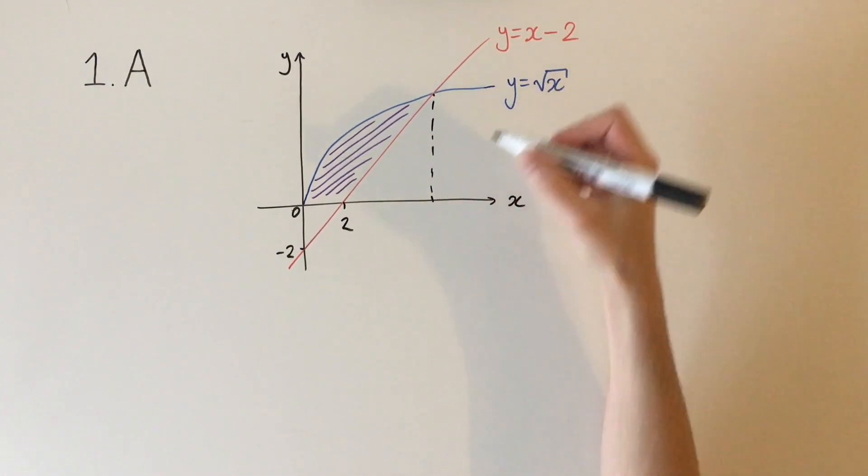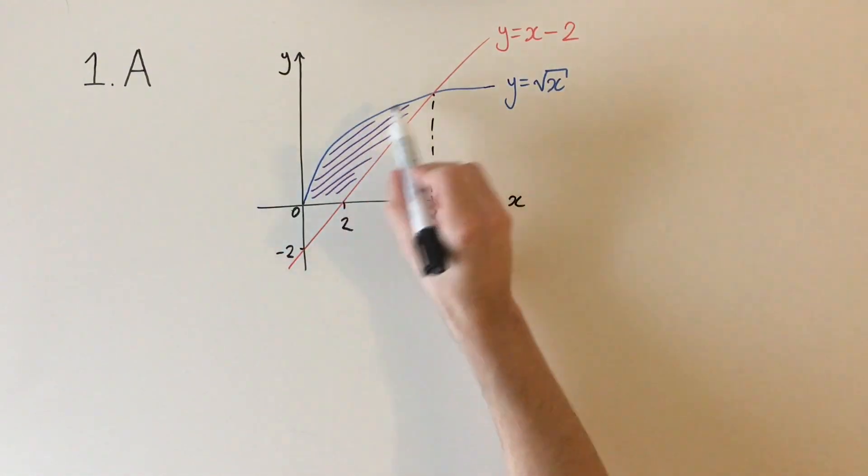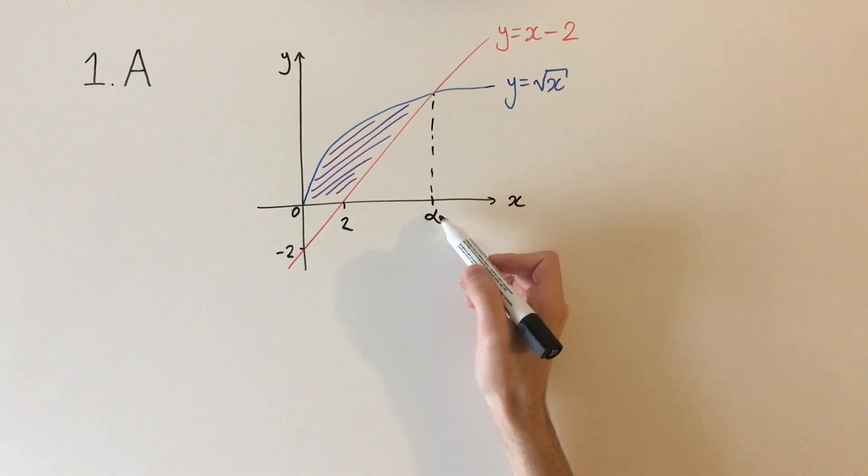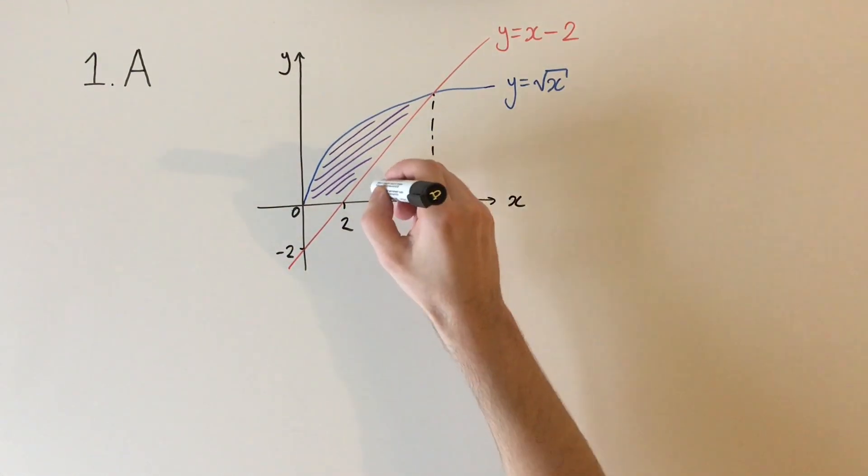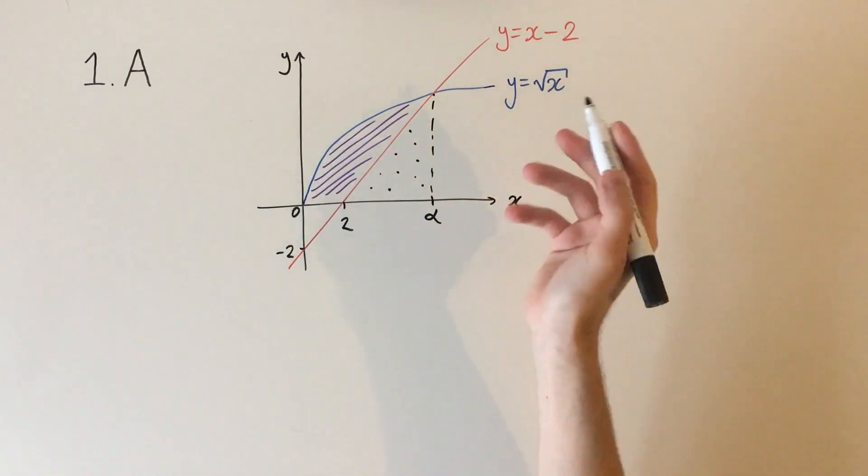Let's call this point alpha, which we'll find in a bit. We can calculate the integral of square root of x over this whole region, 0 to alpha, and then subtract the area of this triangle, the one with the black dots. This is going to give us the answer.